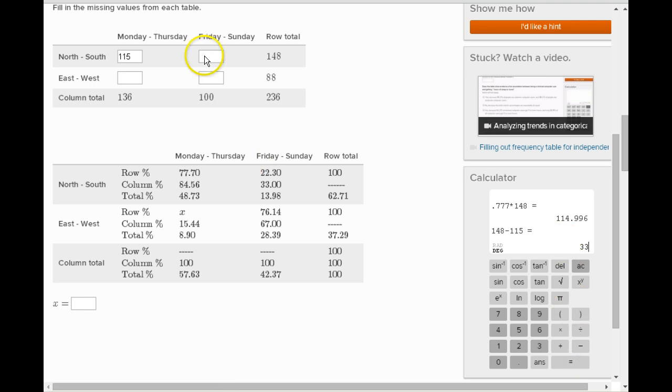Now how many would have been the Friday to Sunday deal? Well that's pretty simple, we just take the 148 total and subtract the 115, and we have 33 that are going north to south on Friday on the weekends basically, Friday through Sunday. 115 on Monday through Thursday.